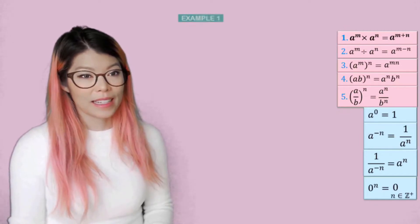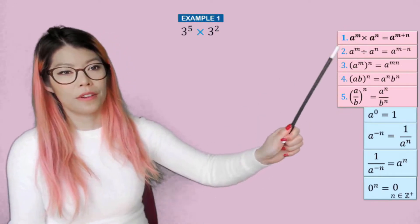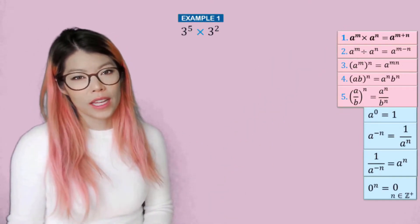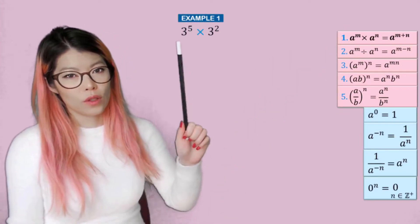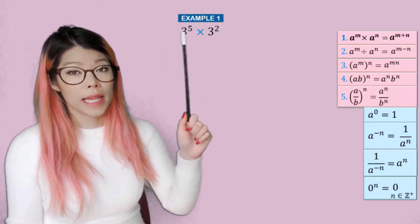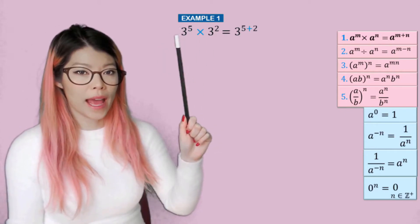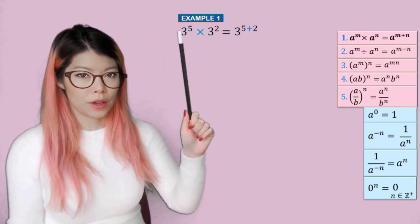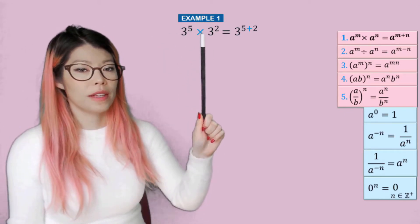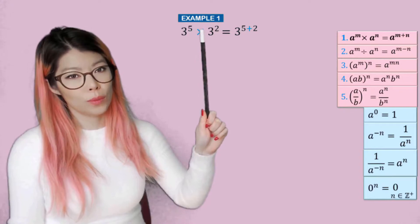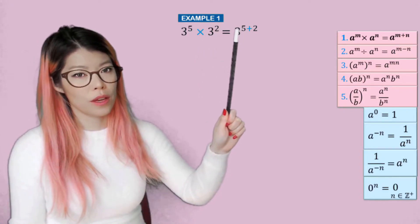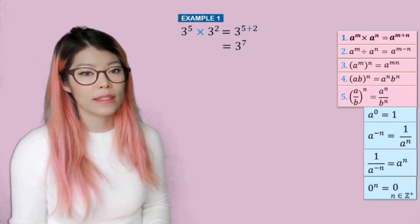Okay, example one: let's practice the first rule. So here we have two expressions with the same base. What do we do to the powers? We add them. So three to the five times three to the two becomes three to the five plus two, which is seven.